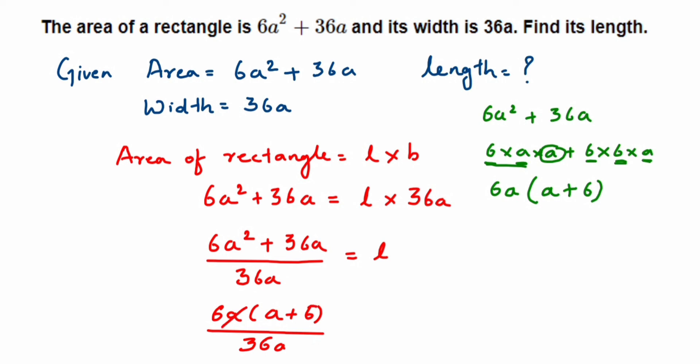Now we can cancel here, this a and a. Now see, 6a is in multiplication, so we can cancel them now. This is 6 ones, and then 6 sixes are 36. This is equal to length.